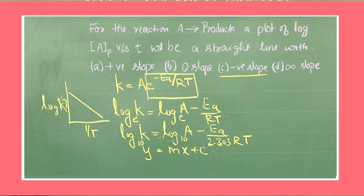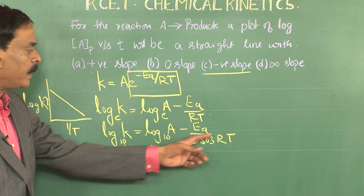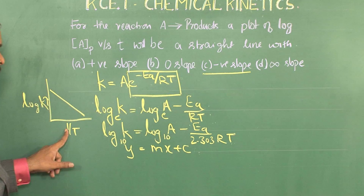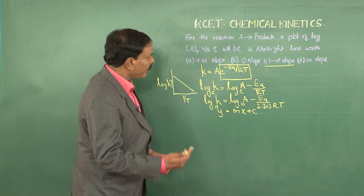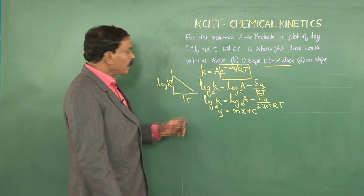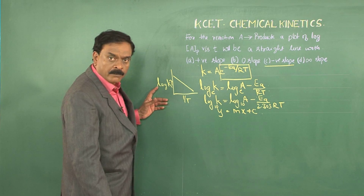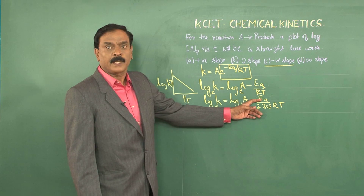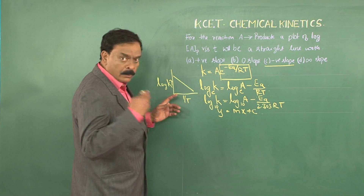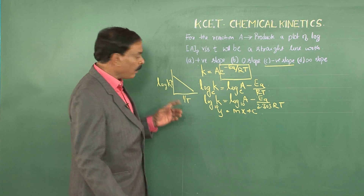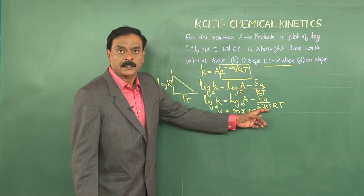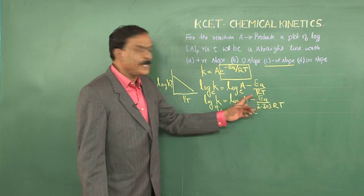Here Y is log K, X is 1/T, and the slope M is −Ea/(2.303R). Since there is a negative sign, the answer is negative slope. Students, there could be a question where you are given the slope of the graph of log K versus 1/T and asked to calculate Ea. When it is log K versus 1/T, the slope is −Ea/(2.303R). Knowing the slope and R, Ea can be calculated.